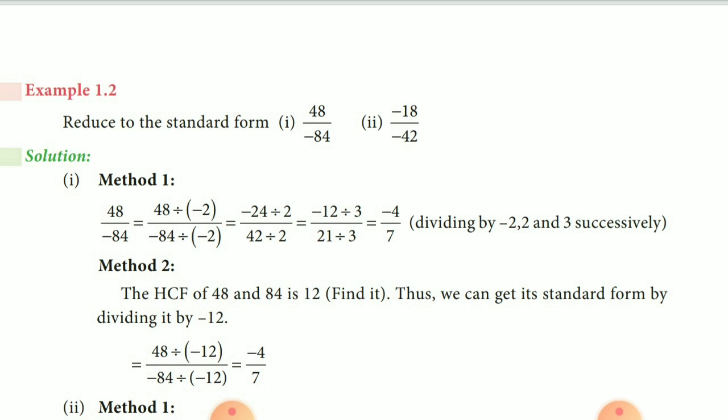Next, example 1.2. Simplify to its standard form: 48 by 84. So, there are two methods. Method 1: 48 by 84, both are even numbers, so it is divisible by 2. Next, we got 24 by 42, also even, so divide by 2. We got minus 12 by 21. Now it is a multiple of 3, so we can divide by 3. So finally, we got minus 4 by 7.